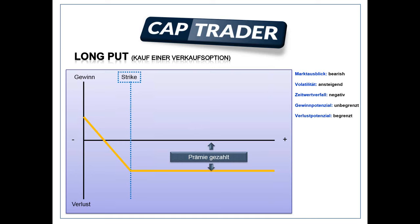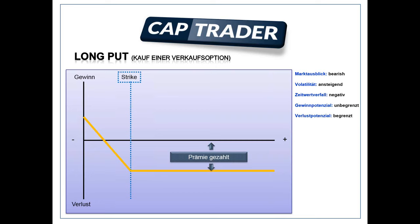Long Put sieht genau umgekehrt zum Long Call aus. Sie zahlen auch die Prämie, sind also erstmal im Minus, das Geld wird vom Konto abgezogen. Sie profitieren erst dann, wenn der Aktienkurs fällt – dann steigt Ihr Gewinn. Umgekehrt beim Short Put: Da sind Sie Stillhalter des Puts, Sie erhalten eine Prämie, erleiden aber Verlust, wenn die Aktie fällt.